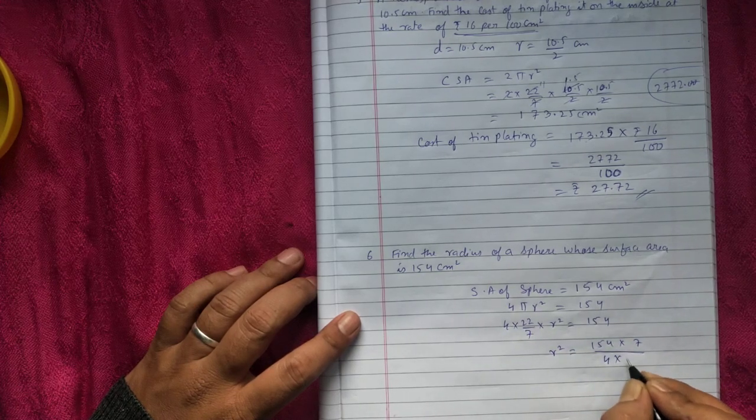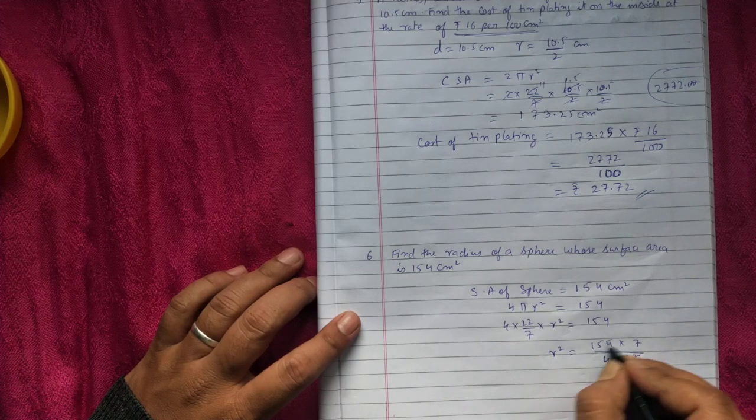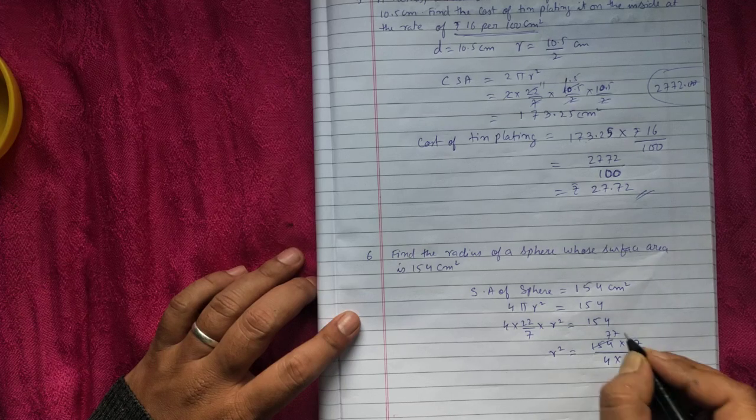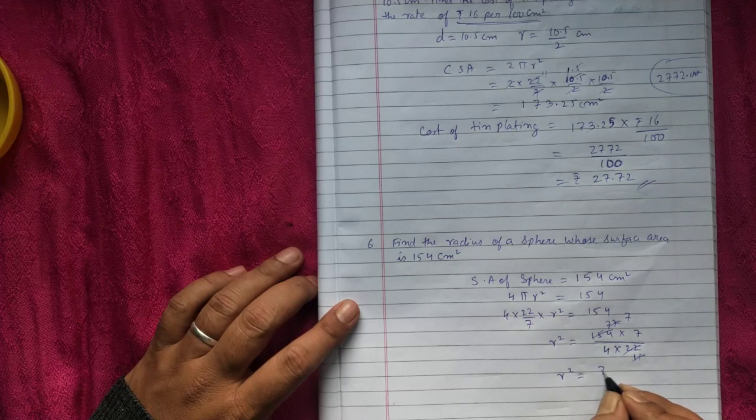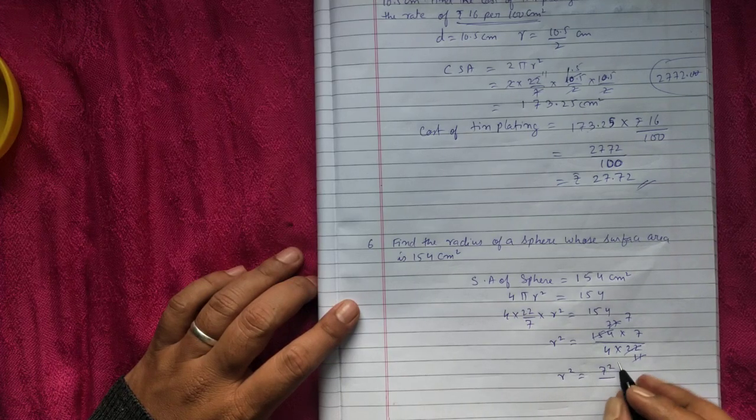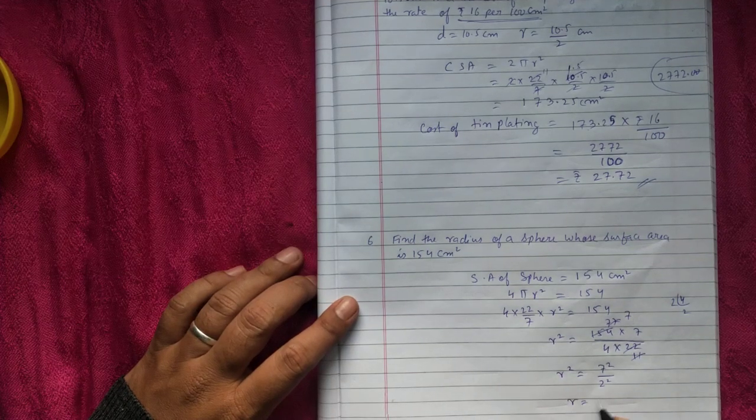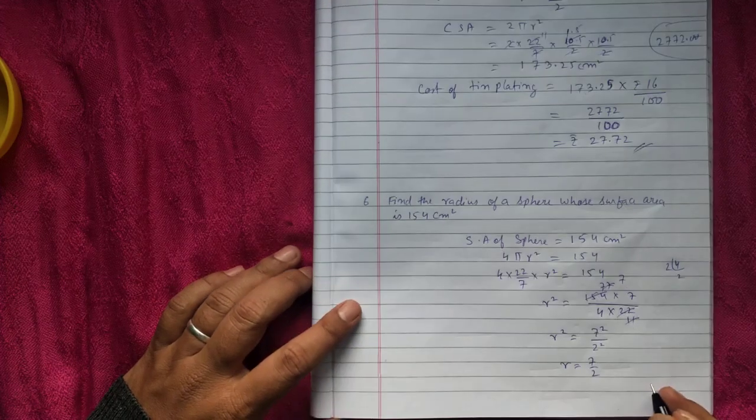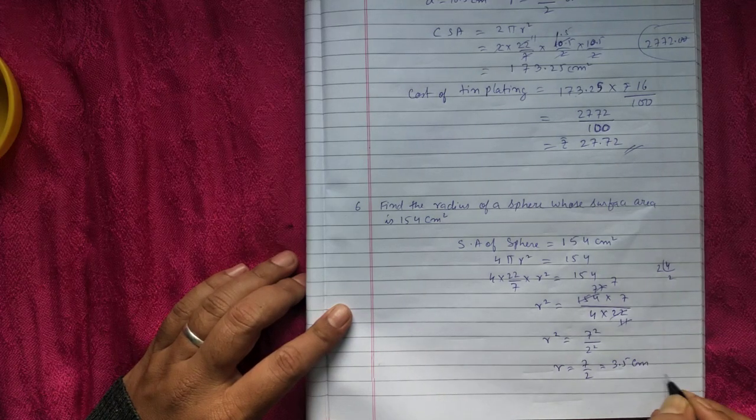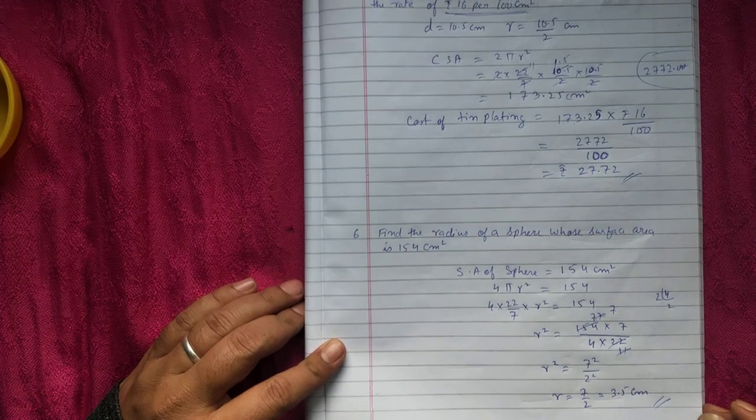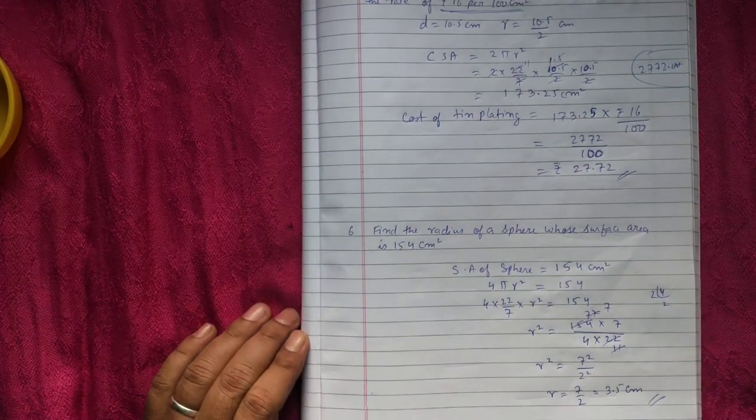You can cancel 2, 11, 2, 77, 11, 7. You're getting r square equal to 77, 7 means 7 square, 4 means we can write 2 square. So square cancel, r is 7 by 2 or we can write 3.5 centimeter. You can pause the video and write the solution. Thank you.